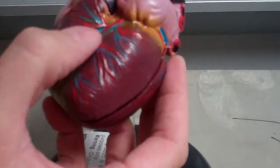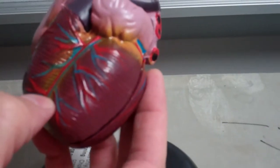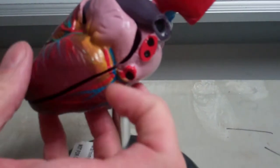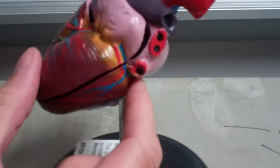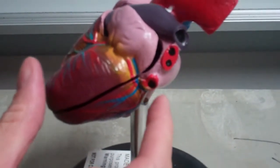On the front, in the sulcus here, you're going to have the anterior interventricular artery, and then wrapping around and heading towards the posterior portion of the heart is going to be your circumflex.